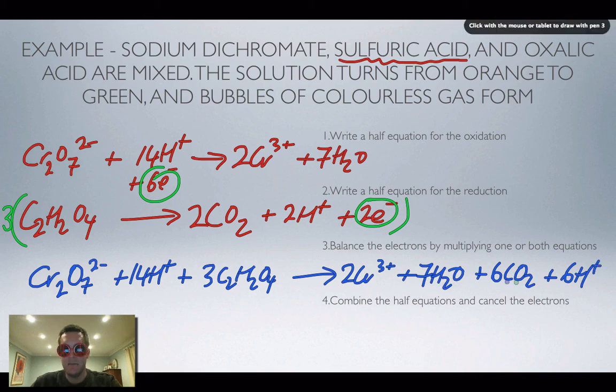Now notice here I've got H plus on both sides so I can actually cross them out here because I've got six of them and that's going to get rid of six of these, so I'll change that to an 8.